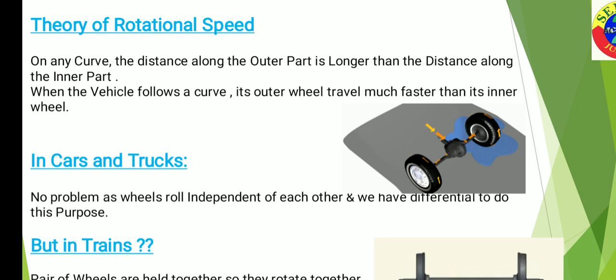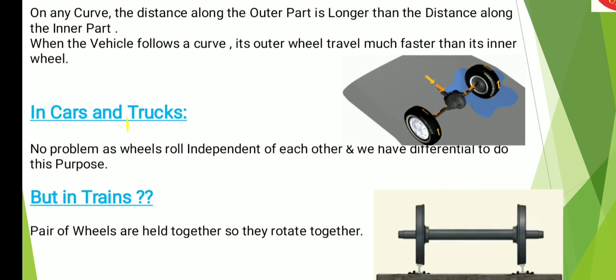On any curve, the distance along the outer part is longer than the distance along the inner part. When a vehicle follows a curve, its outside wheel will travel much faster than its inside wheel. In cars, trucks, and buses, this is done by the differential. But in trains, we do not have a differential.